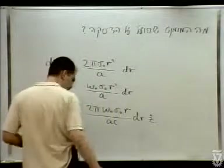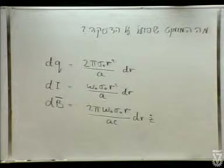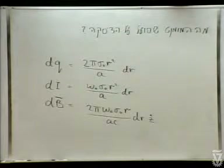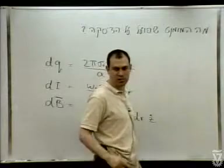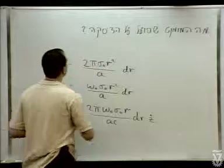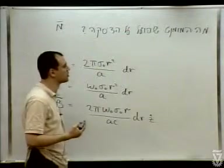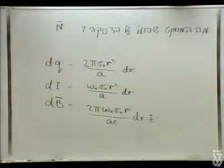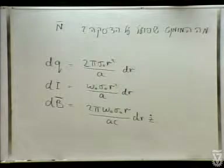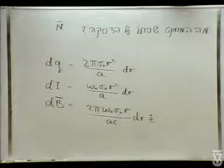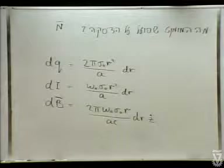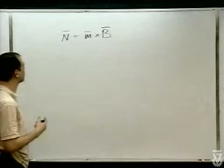איך נחשב את המומנט שפועל על הדיסקה? המומנט N — מומנט סיבור — אנחנו רוצים לדעת מה N שפועל על הדיסקה. יש לנו קשר עם המומנט המגנטי: N = M × B. אנחנו נתייחס רק ל-B החיצוני ונחשב את המומנט הנובע ממנו.